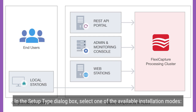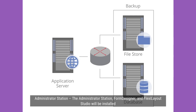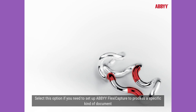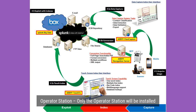In the Setup Type dialog box, select one of the available installation modes. Administrator Station: the Administrator Station, Form Designer, and Flexi Layout Studio will be installed. Select this option if you need to set up ABBYY FlexiCapture to process a specific kind of document.